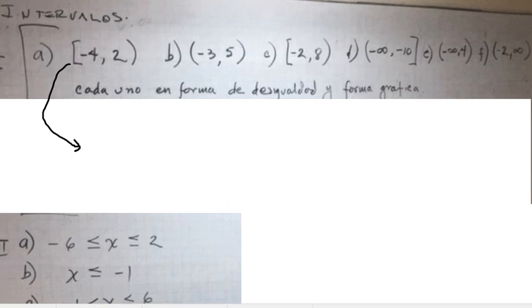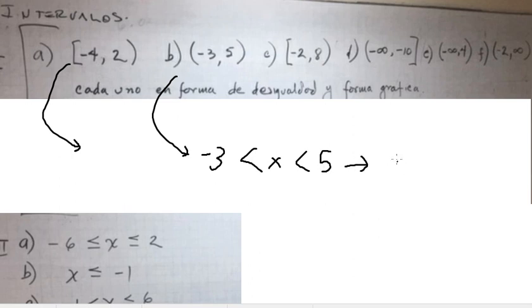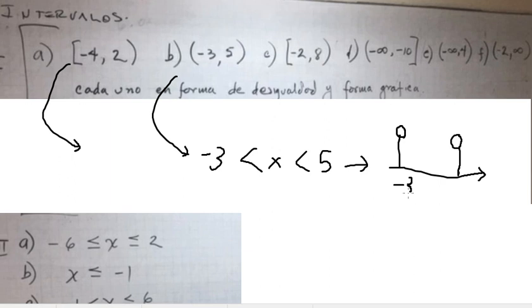Now let's go to B. The figure should look like this, with y and y marked. This interval is from negative three to number five.